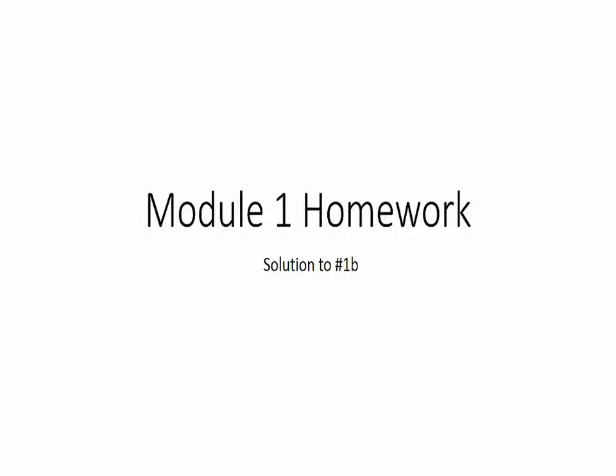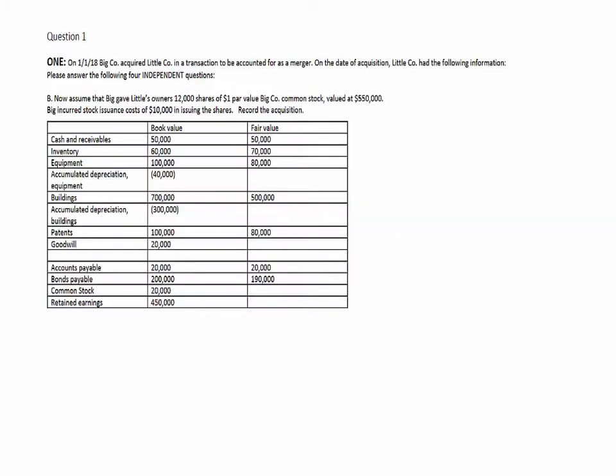Part two. Let's go ahead and go through the solution to homework 1B. 1B is just like 1A — the only difference is that instead of paying cash, we're giving shares of stock to the previous owner of Little Company.